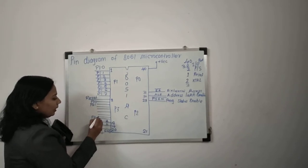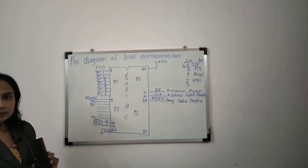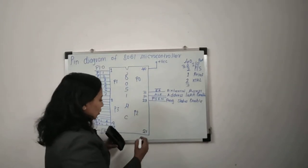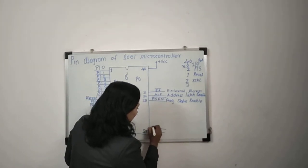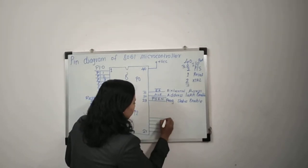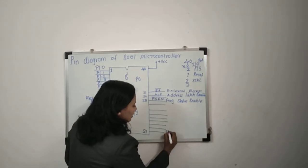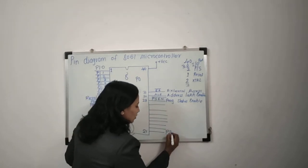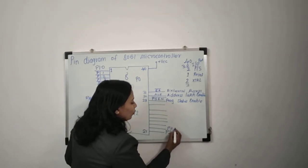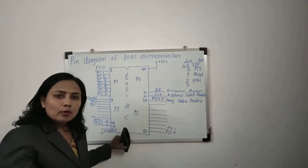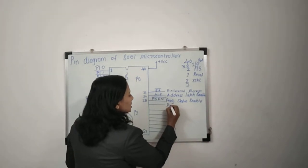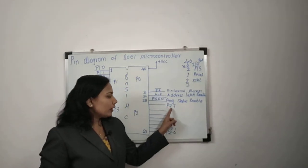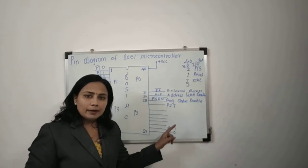On the right-hand side we have port 2 with 8 pins. The first pin is labeled P2.0, meaning port 2, pin number 0. Then P2.1, and the last pin is P2.7, meaning port 2, pin number 7.